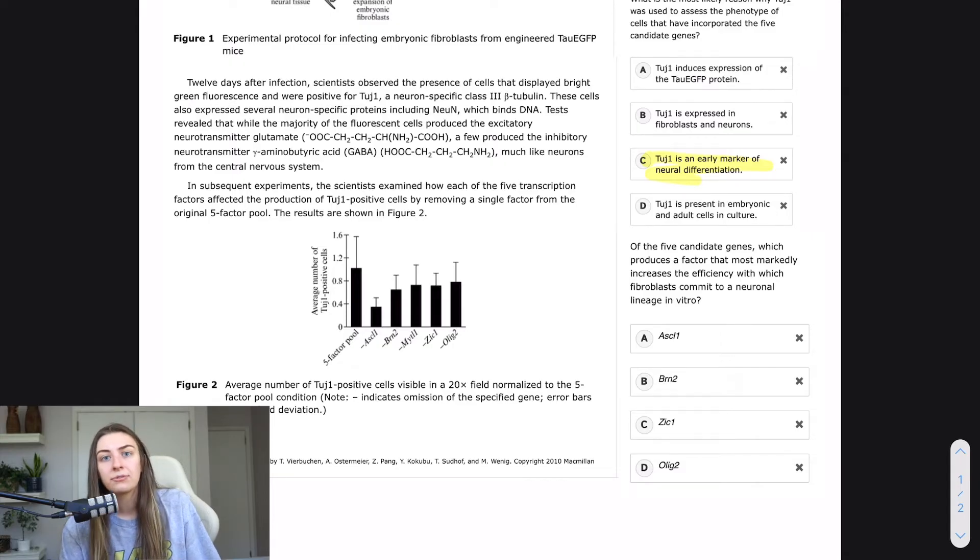Maybe that's not how y'all would simplify it, but that's just what helps me to kind of wrap my brain around this question so that I can actually look back at the graph and the passage and know what I'm looking for. So I have simplified this down to of the five candidate genes, which is most important in this experiment? So we should have done a little bit of figure interpretation when we were going through the passage, but of course I didn't read the passage right now. So we can kind of go back and look at the figure because that's where we're going to find our answer.